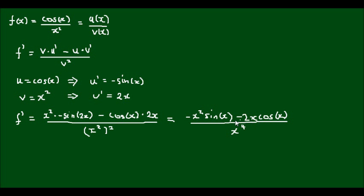And I can factor out a negative x here in this expression. So if I write this as negative x outside of x sin(x) plus 2 cos(x), I can then cancel out an x with the x to the power of 4 on the bottom.